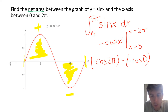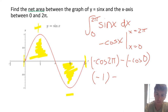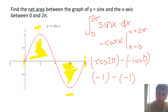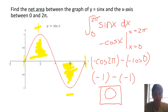Cosine of 2π is 1, so that term is negative 1. Cosine of 0 is also 1, so negative cosine of 0 is negative 1. We have negative 1 minus negative 1, or negative 1 plus 1, which equals 0. Just as we suspected, 0 is the net area from 0 to 2π for the function sine x.